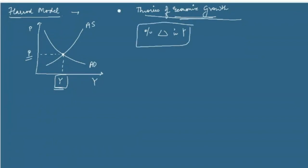In this unit we will talk about what theories explain the growth process — which factors cause this percentage change — and whether these different theories match with real life or not, what their drawbacks are, and why there are so many growth theories rather than one single theory that explains the whole growth process. These are the different kinds of questions that we will handle.